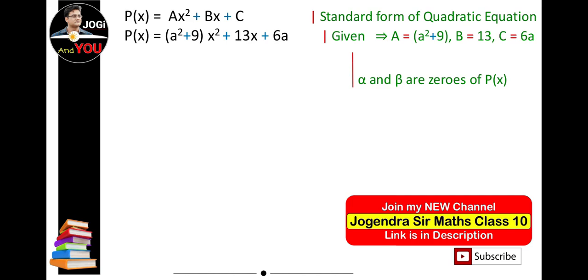If α and β are zeros of the polynomial, then it is given that α is the reciprocal of β. One zero is reciprocal to the other. By cross multiplication, we get αβ = 1. This is equation 1.